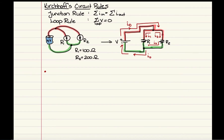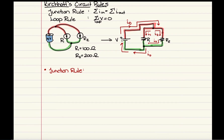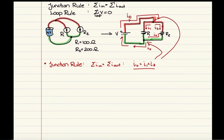The first step is to apply the junction rule. Looking at the top junction, the sum of I in must equal the sum of I coming out. That translates to: I sub zero comes in, and I sub one plus I sub two come out. We can also apply this to the bottom junction and get the same relationship. So this gives us one equation relating all three currents.